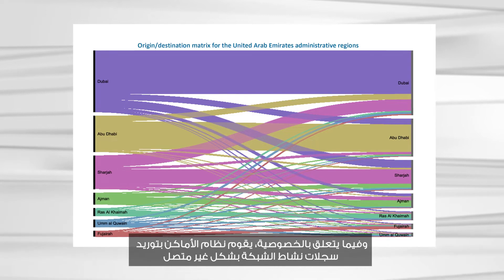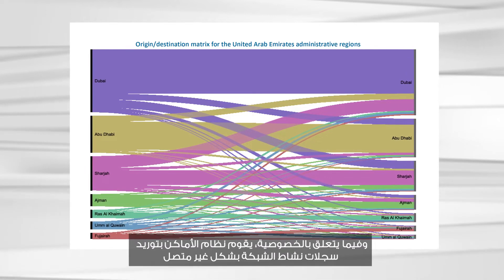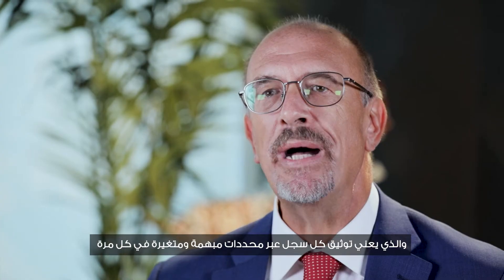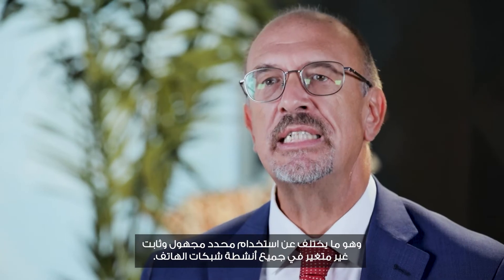The coarse granularity of network activity data requires this matrix to be computed on a daily basis as the minimum reliable aggregation. For privacy, PLACES imports network activity records in an unlinked form, which means that each network activity record is countersigned via an opaque identifier that is different every time. In other words, the same phone connecting to two cells in two different moments will generate two distinct identifiers. This is different from using an anonymous but persistent identifier that stays the same for all the activities of a given phone.